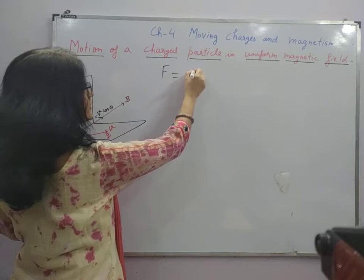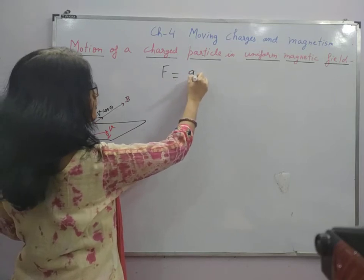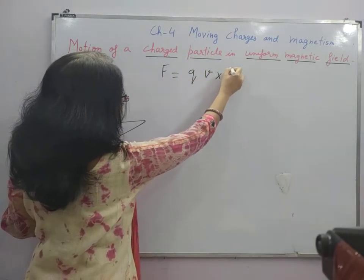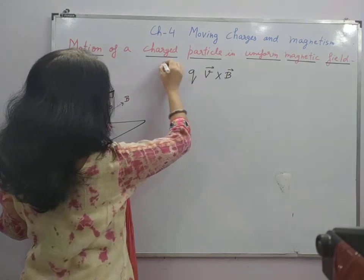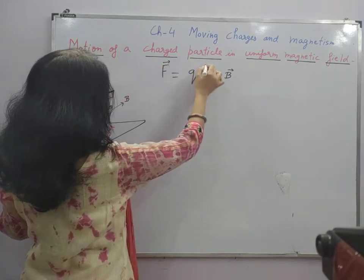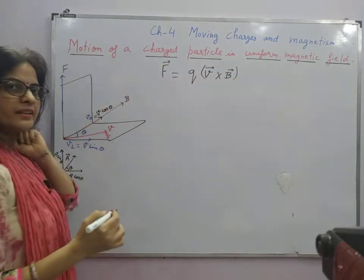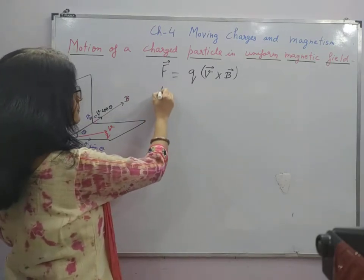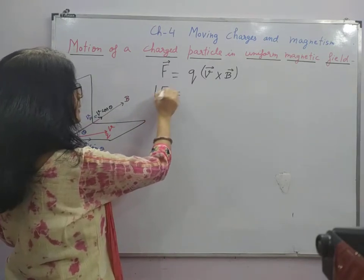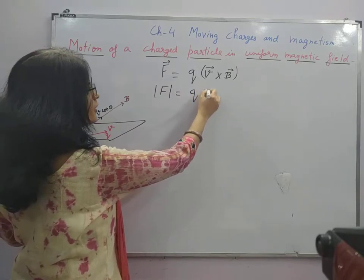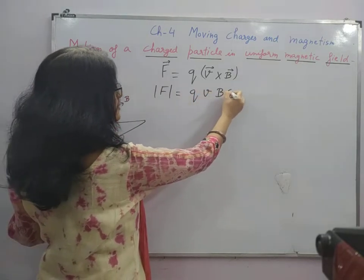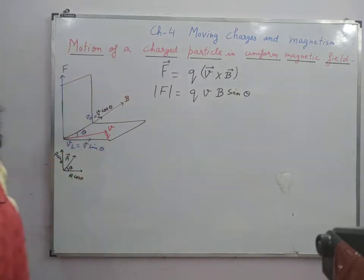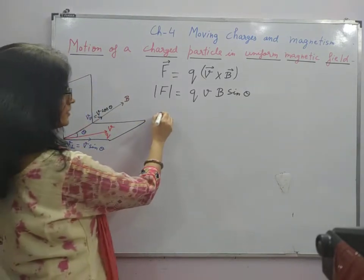The magnetic force in vector form is F = qv × B. If we write the magnitude, this magnitude will be F = qvB sinθ. From here we can discuss the cases.